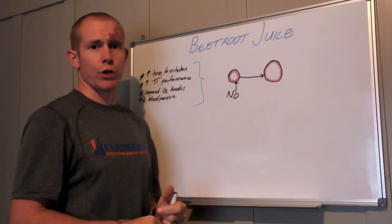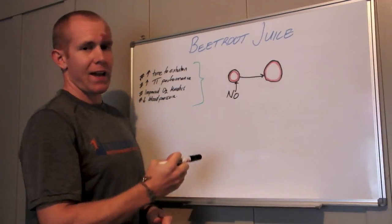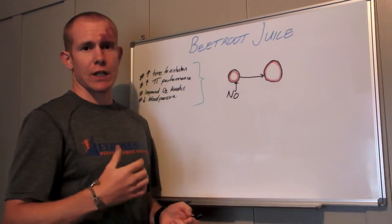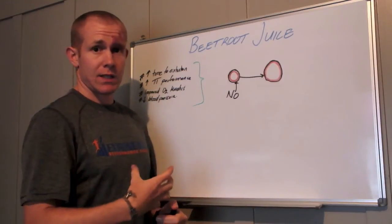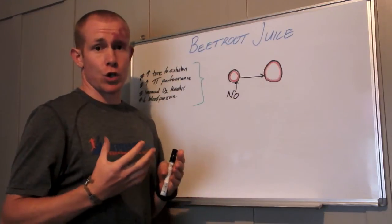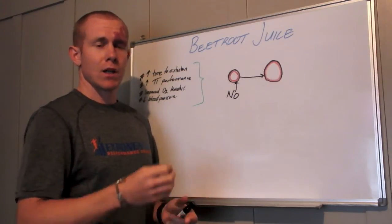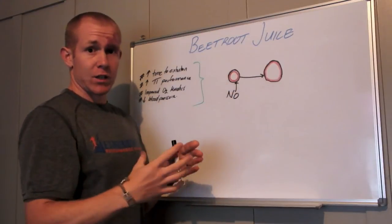So there you have how beetroot juice is actually improving your performance. More nitrate in your system, so more nitrate is available to produce nitric oxide. More nitric oxide means more vasodilatory capacity, so your smooth muscle around the arteries relaxes.